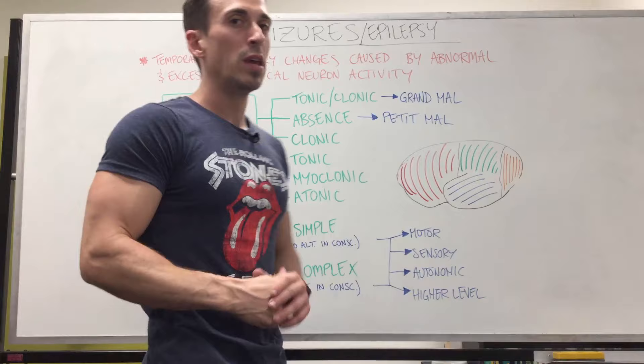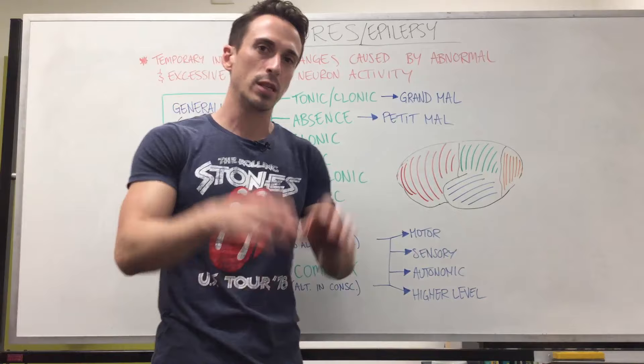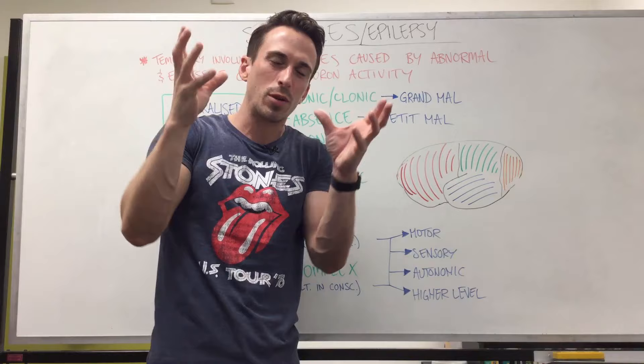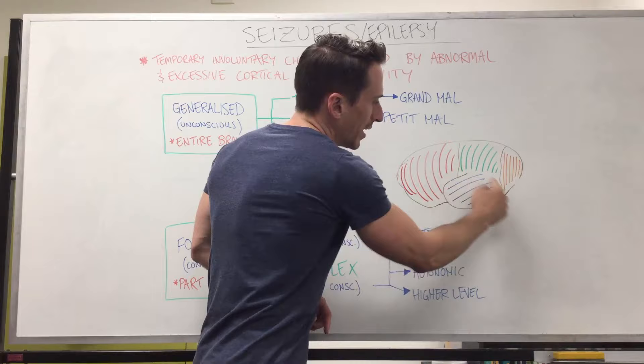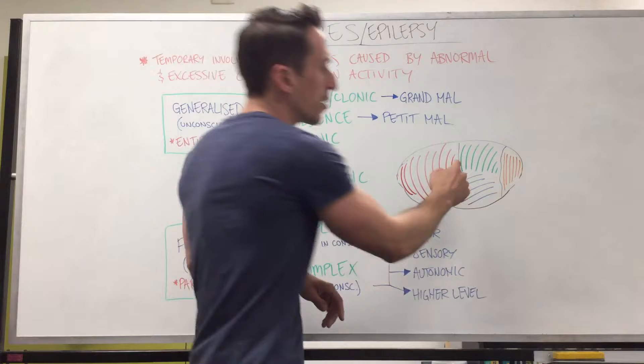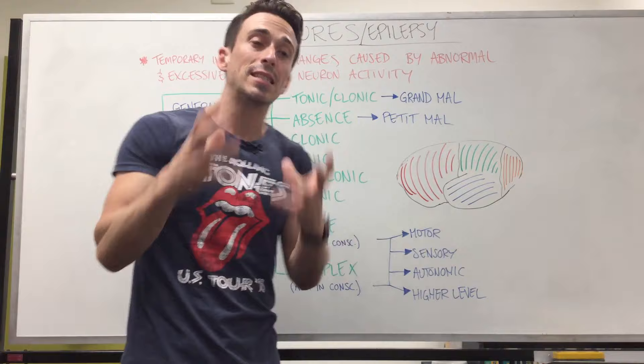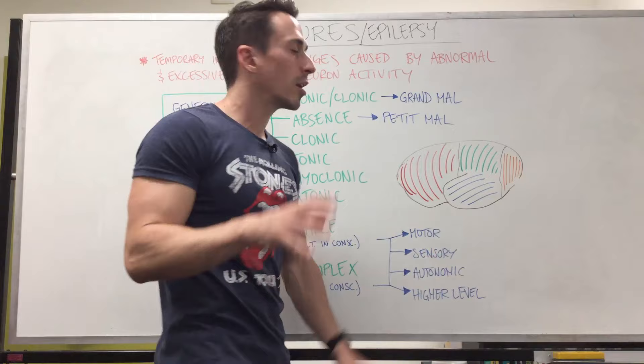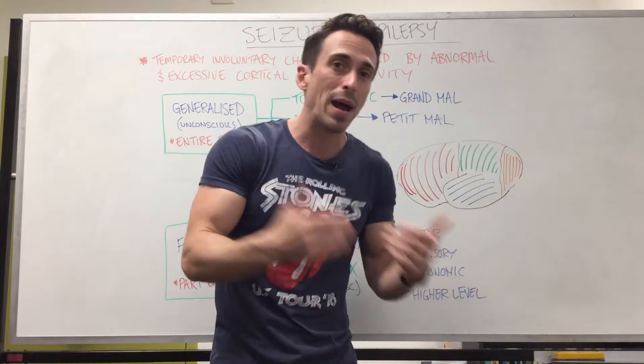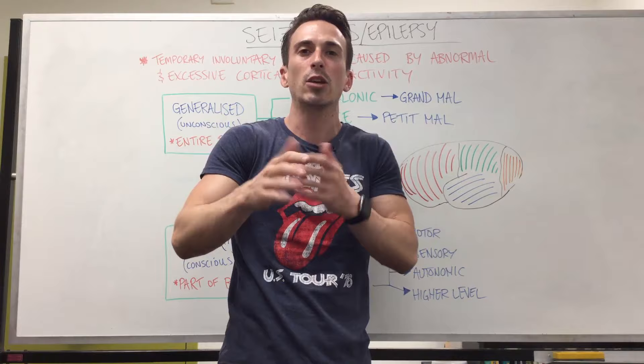Let's look at focal seizures that present with motor symptoms. Remember, we're looking at certain parts of the cortex — the outer level of the brain, two to three millimetres thick, broken up into lobes: the frontal lobe, the parietal lobe, temporal lobe, and occipital lobe. The parietal lobe is important for sensation, so focal sensory seizures involving somatosensation — sensation coming from the body such as tickling or tingling — originate from the parietal cortex.